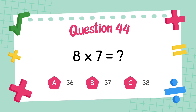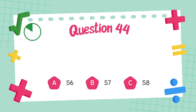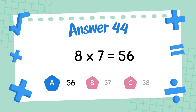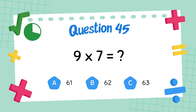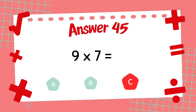What is 8 multiply 7? The answer is 56. What is 9 multiply 7? The answer is 63.